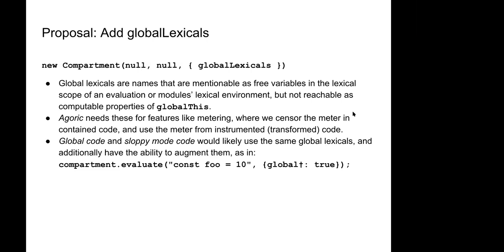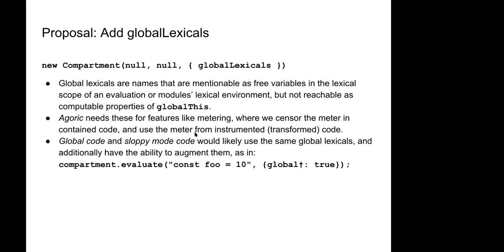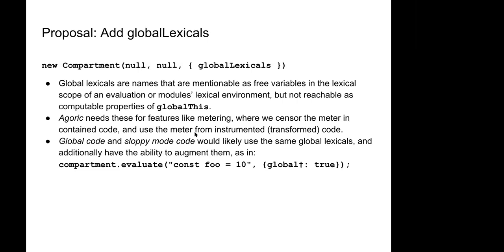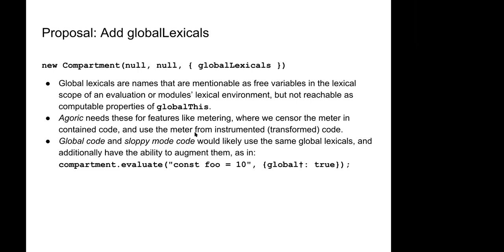The code that goes into the metering transform is 'user code'. The code that comes out is 'transformed code'. There's also 'privileged code'. What actually gets evaluated is the union of privileged code and transformed code.